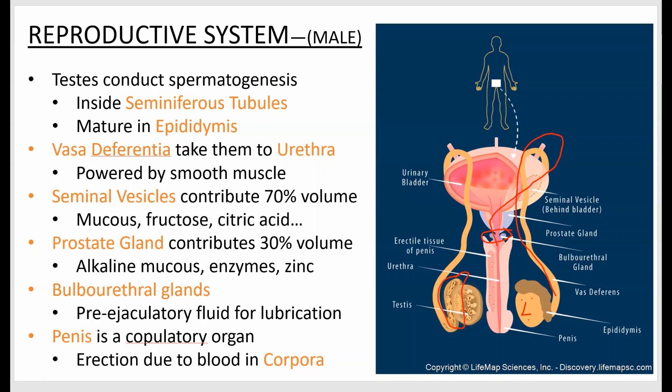The penis is a copulatory organ — it evolved for mating and reproduction. Urine release is kind of a secondary, accidental function due to having an organ there to inject sperm cells. The penis gets erect via increased blood pressure. There are two structures: the paired corpora cavernosa and the singular corpus spongiosum — both fill with blood. There is no bone in the penis, though many animals do have an actual penis bone called a baculum.